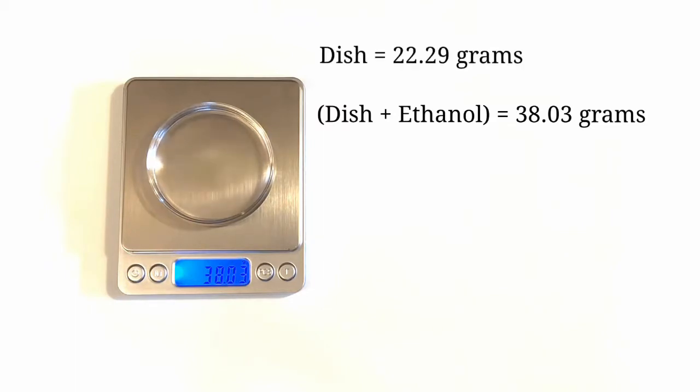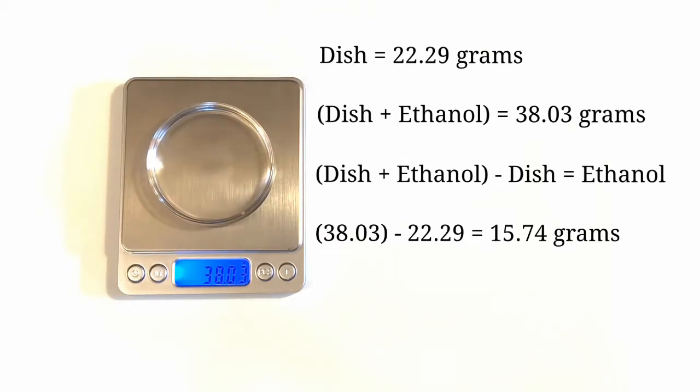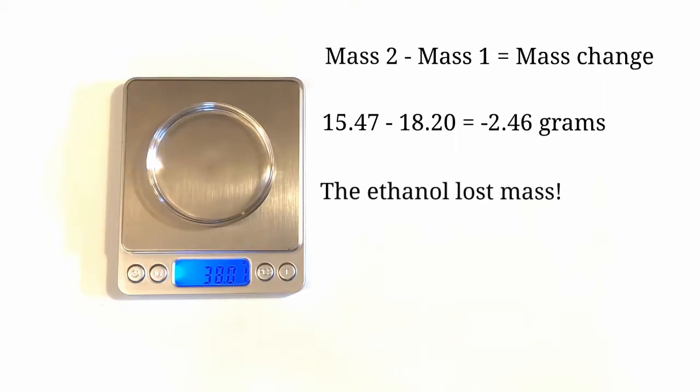Using the same arithmetic that we used earlier, we find that the mass of the ethanol remaining in the dish after we burned it to be 15.74 grams. To calculate the ethanol's change in mass, we just have to take the mass after we burned it and subtract the mass before we burned it. So we can calculate the mass change to be negative 2.46 grams. That means the ethanol lost mass as it burned.